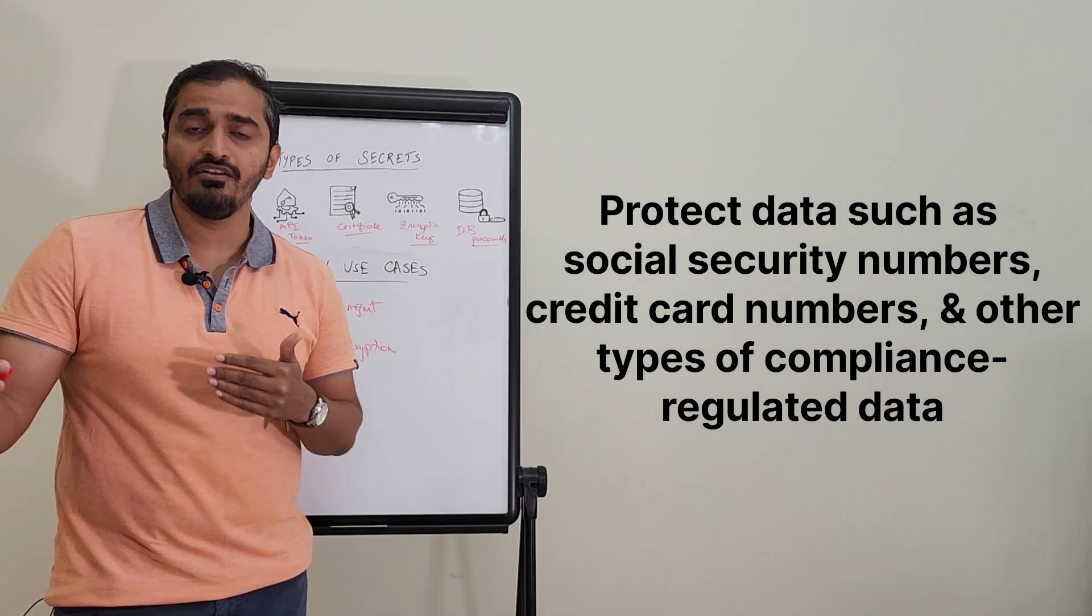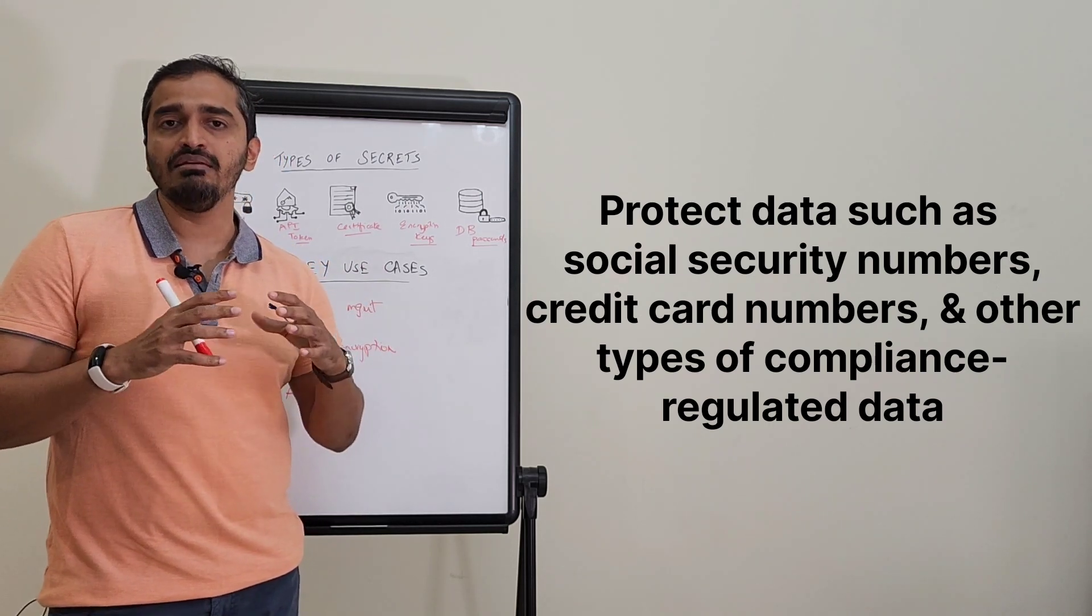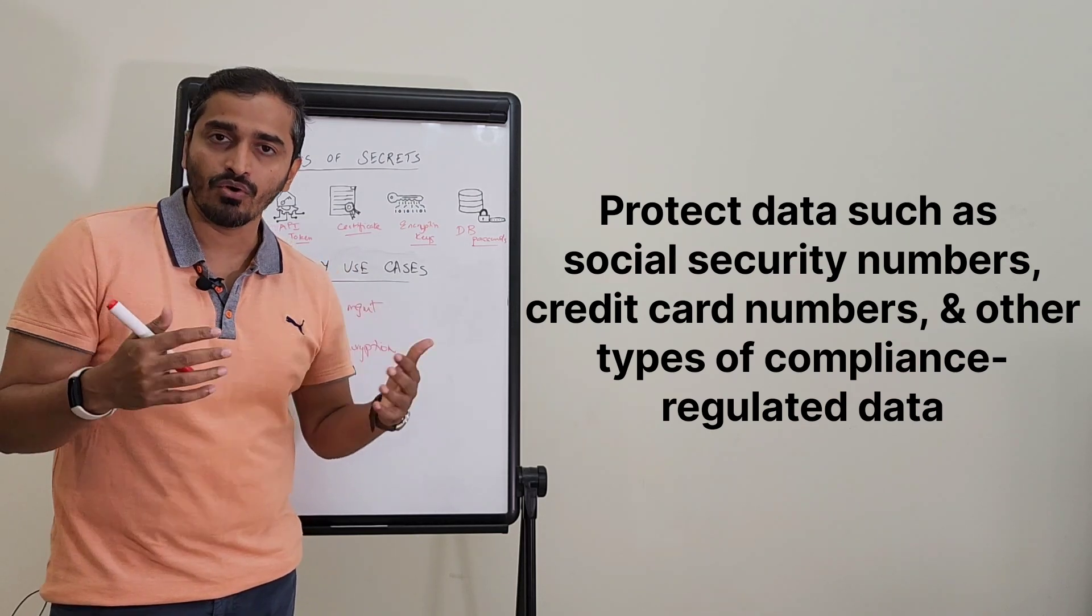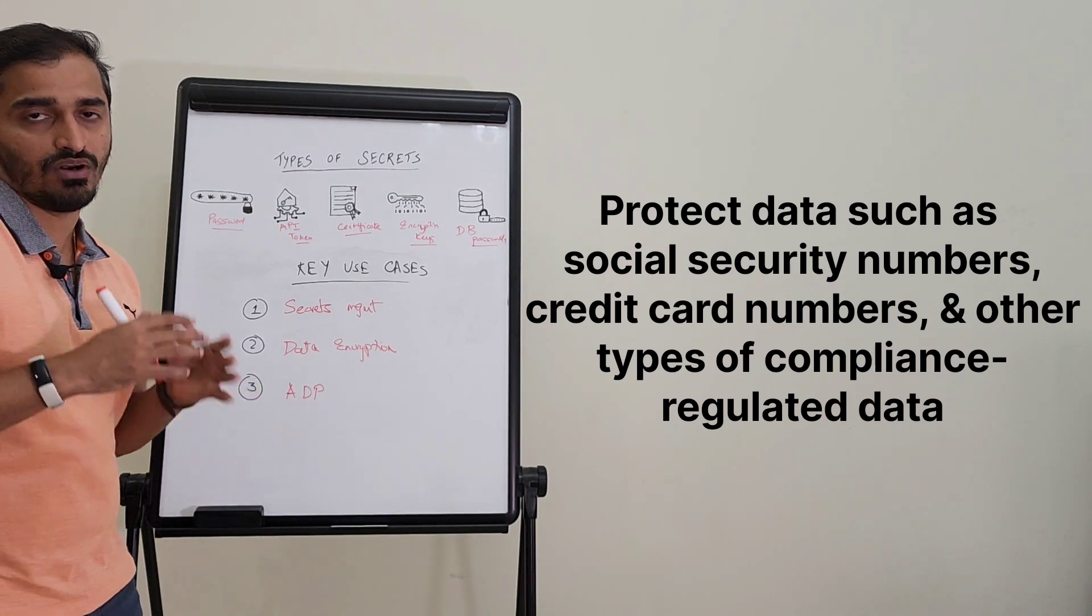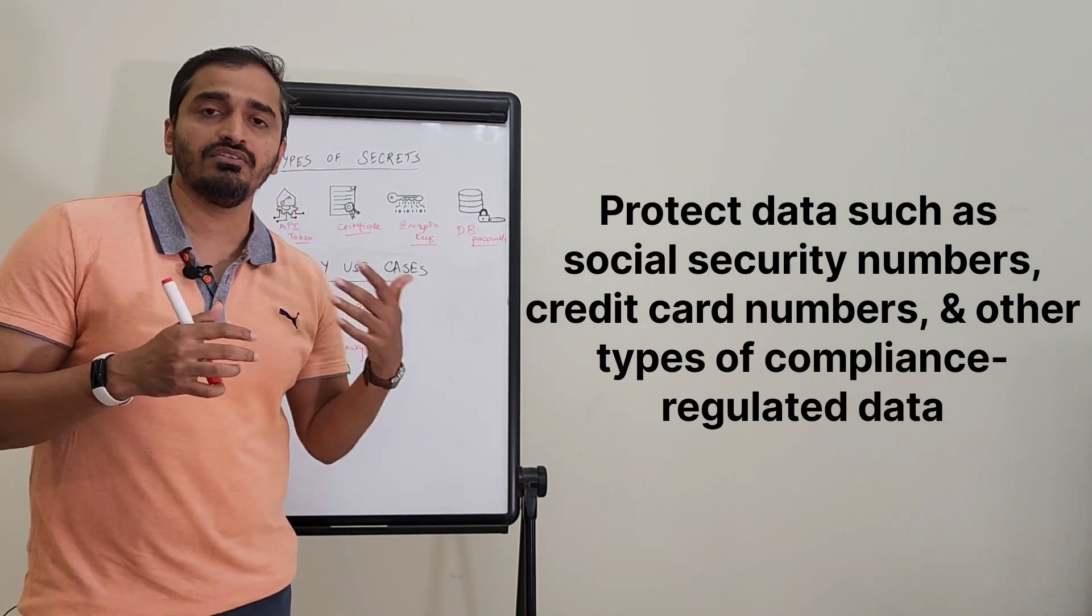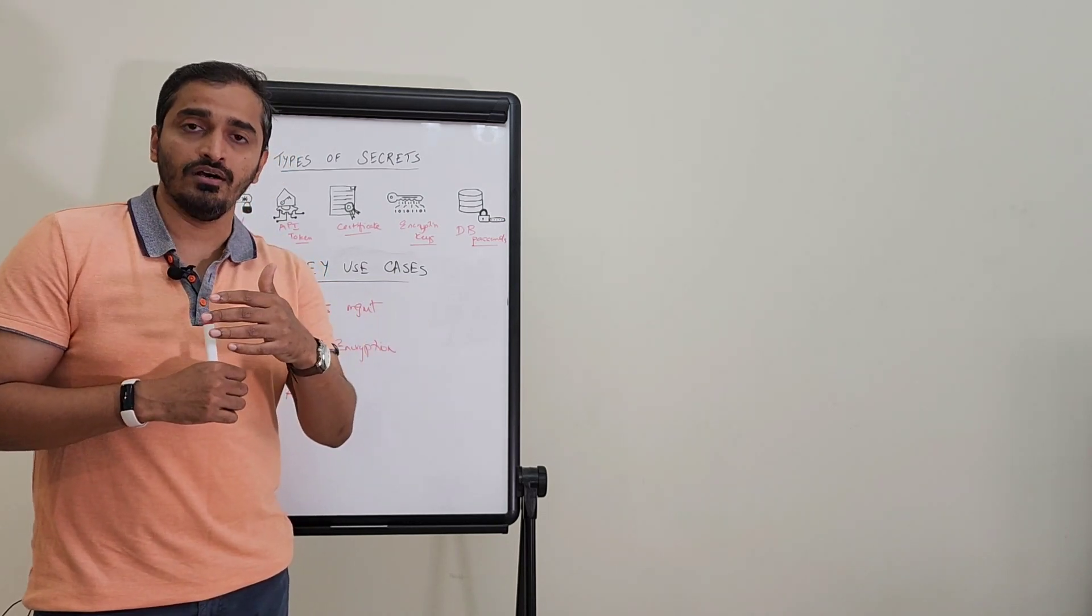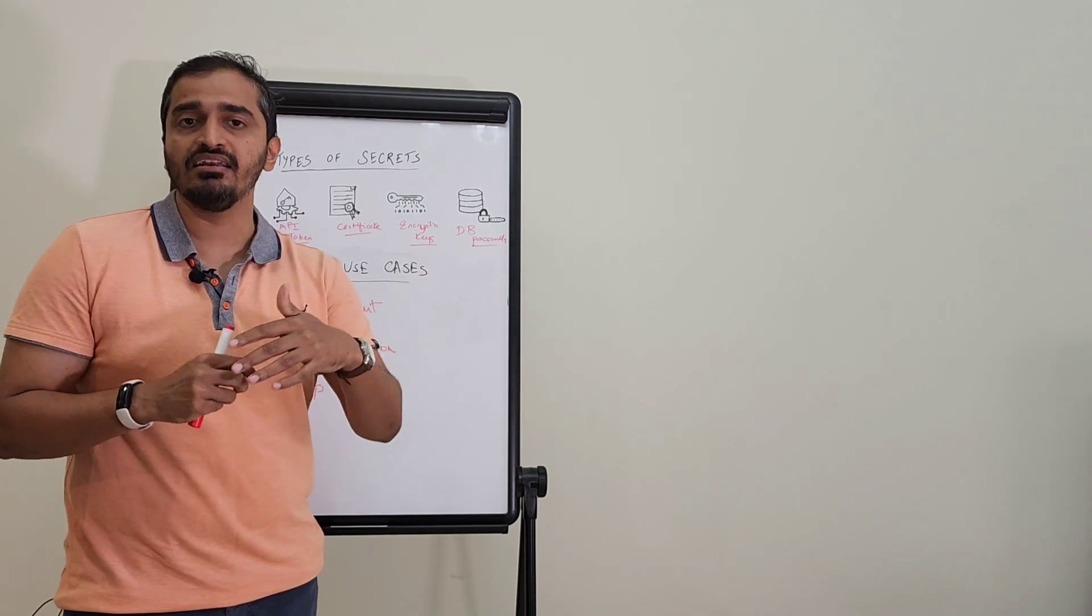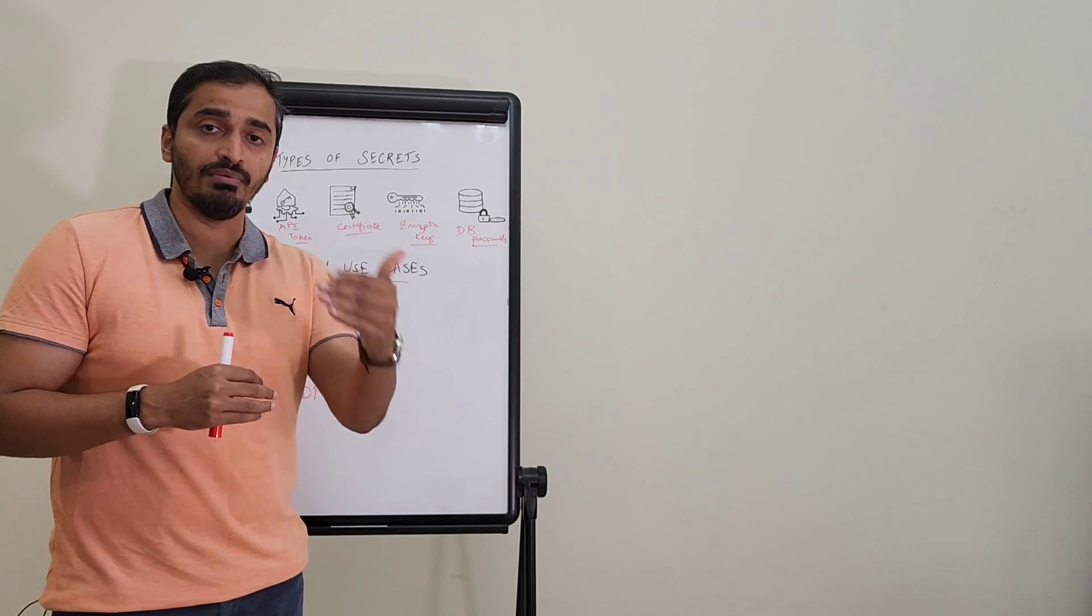They deal with sensitive credit card information for all of their customers. How can that be masked behind a secure protocol? That's how ADP does its job. One of the use cases for ADP is the Transform Engine, which is one of the features of Vault that allows a company to mask data behind sensitive information.